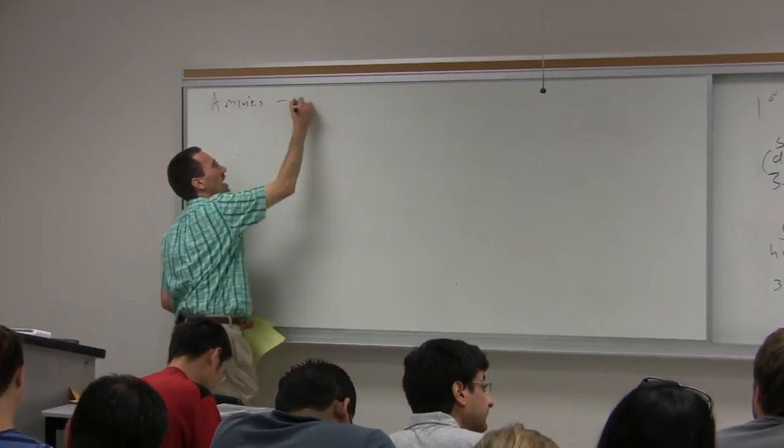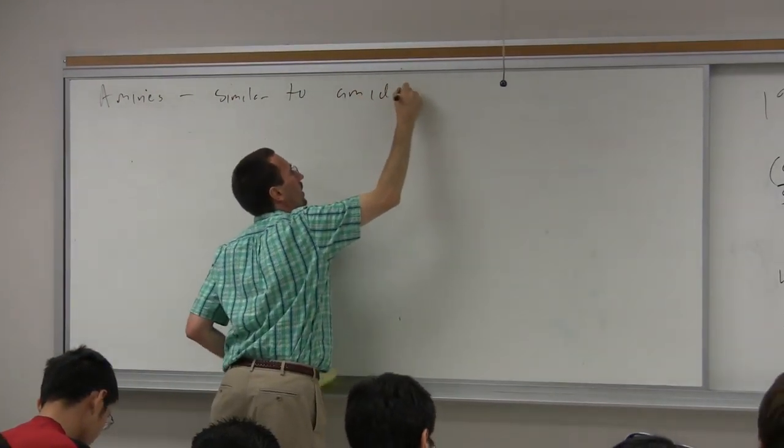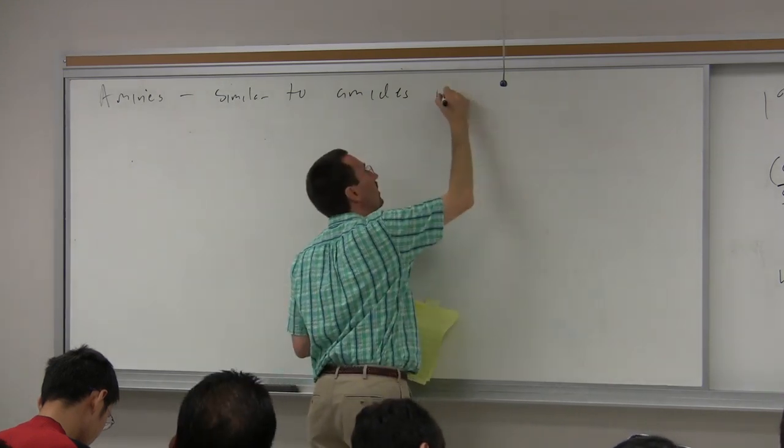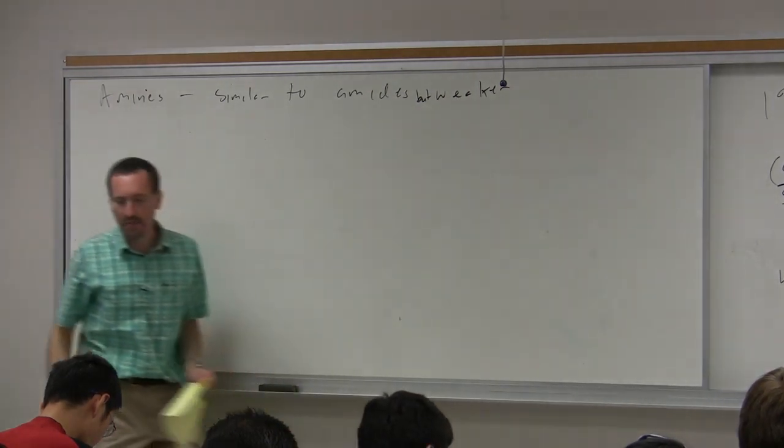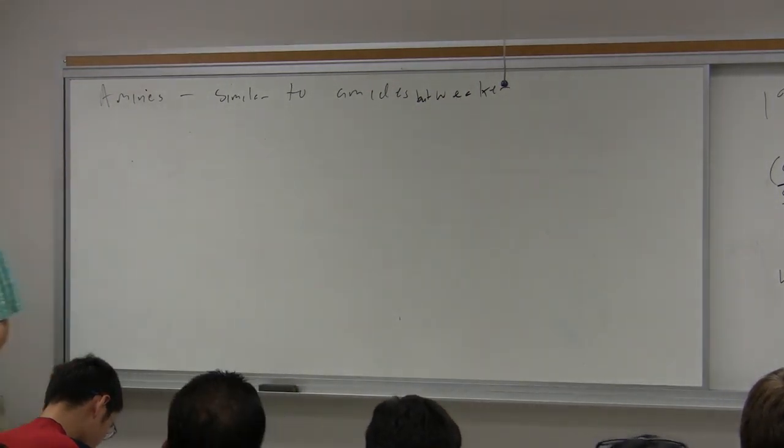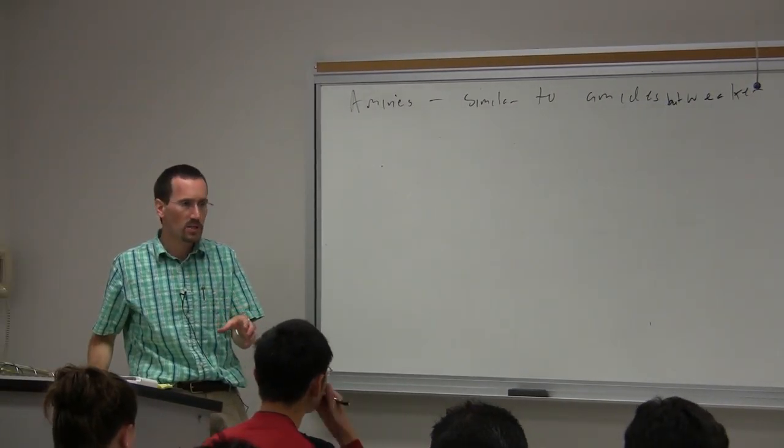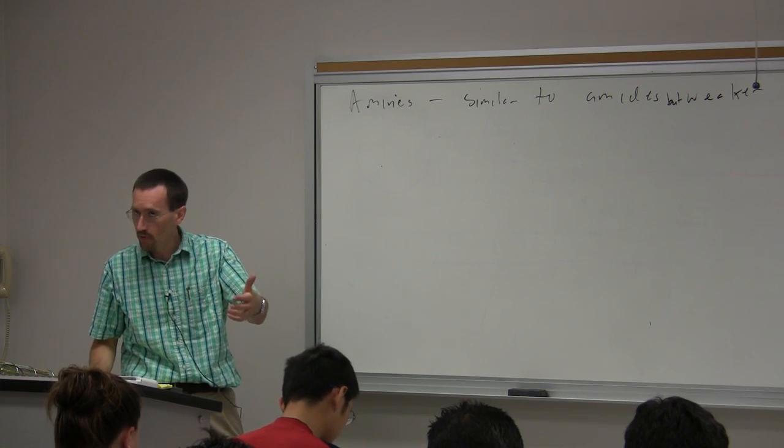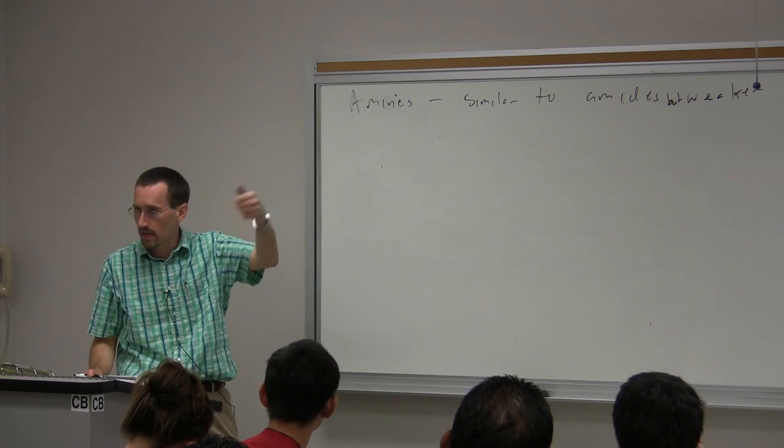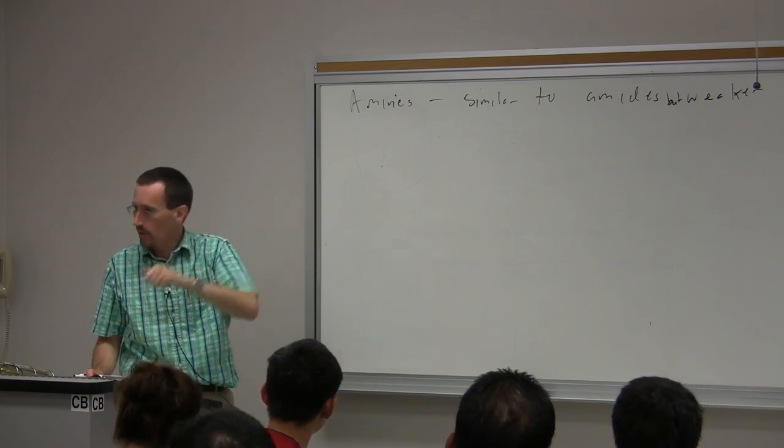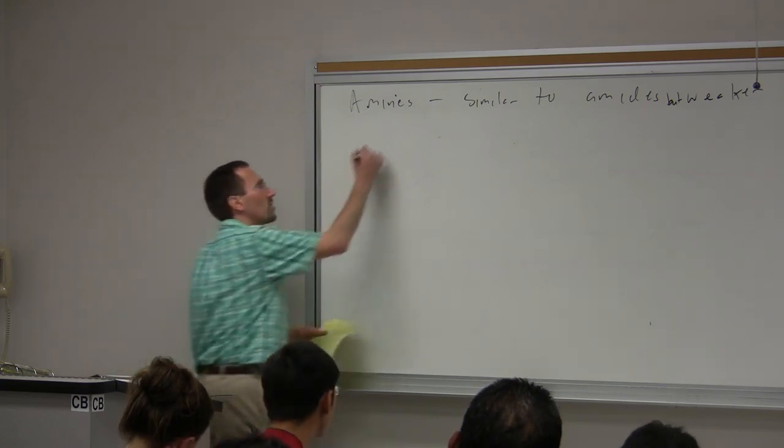Amines are similar to amides but weaker. Obviously, you don't have a carbonyl. But in other words, you have NH stretches, you have NH bends, but the bonds aren't as heavily polarized. When you have less polarization of the bond, you have less change in dipole moment. The carbonyl on the nitrogen is very electron-withdrawing, so that increases the change in dipole moment. It gives you a stronger band.